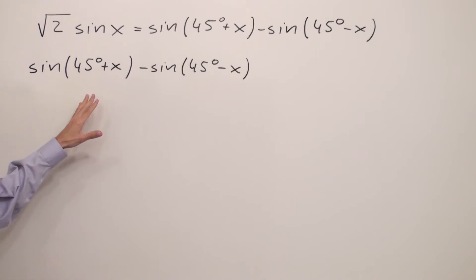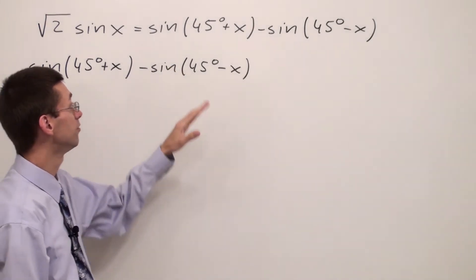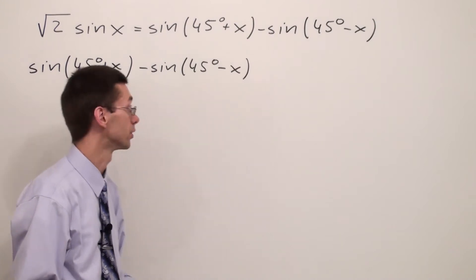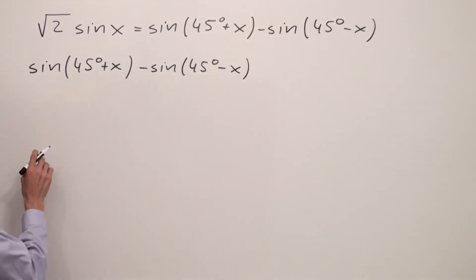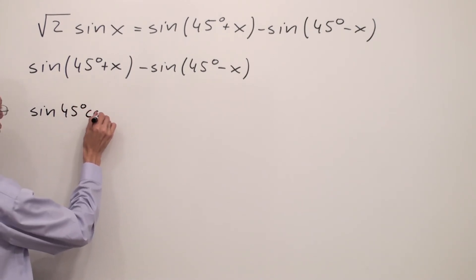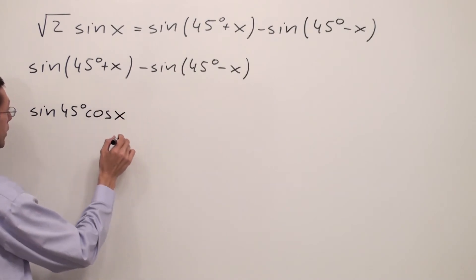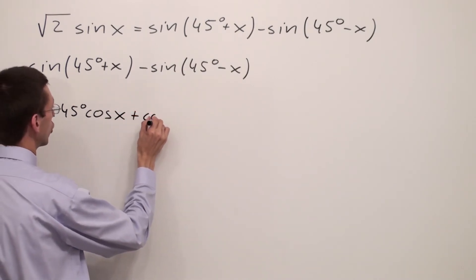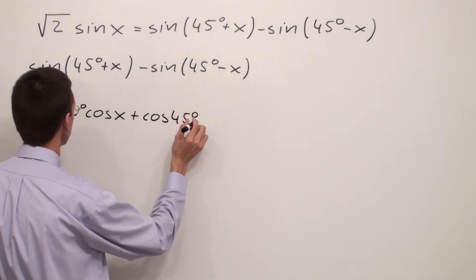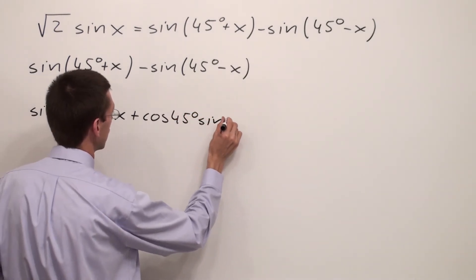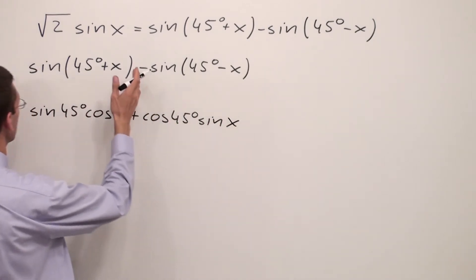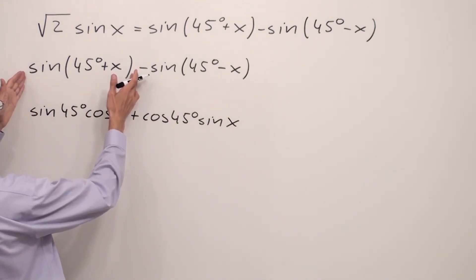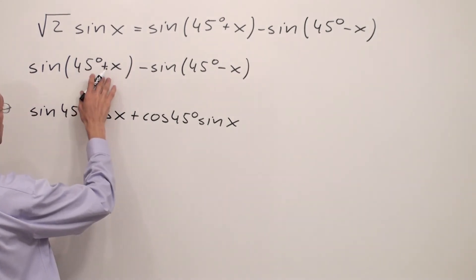That's why we're supposed to use formulas for these two. I have sine of 45° times cosine of x plus cosine of 45° times sine of x. I finished with the sine of the sum of two angles, 45° plus x.